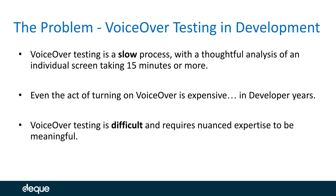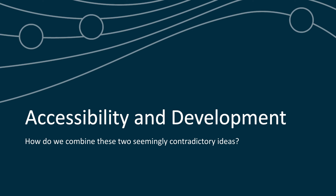Not only is it a distraction from writing code, but there's a question of whether it's even valuable to have developers do VoiceOver testing, since it requires nuanced expertise that not very many developers have. We want to keep developers doing the things they are good at and our accessibility experts doing the things they are good at. So how do we marry these two things — combining accessibility and development in a way that catches defects early without asking people to do things outside their expertise?